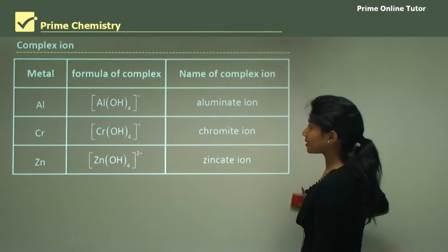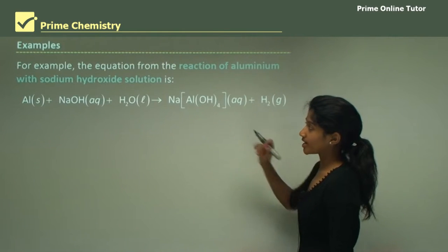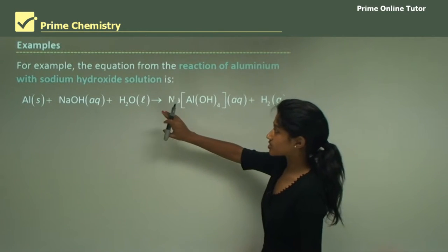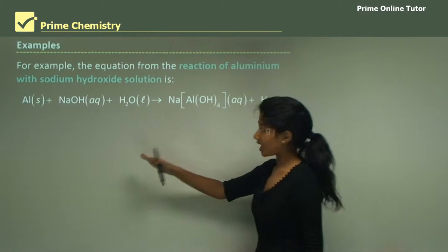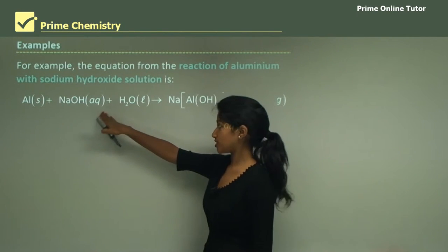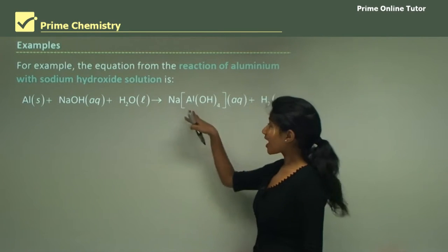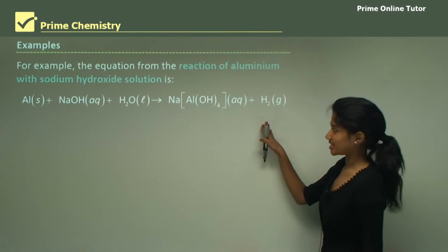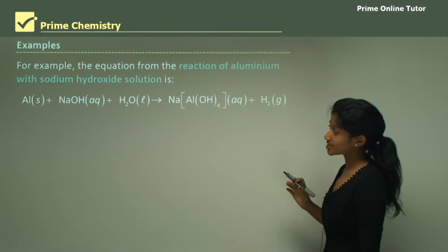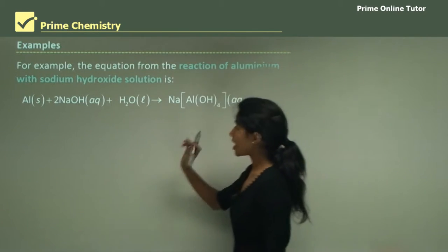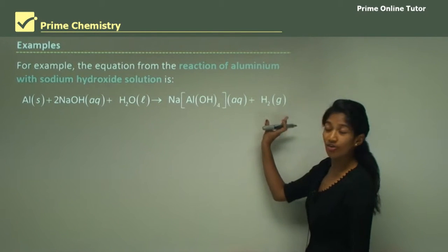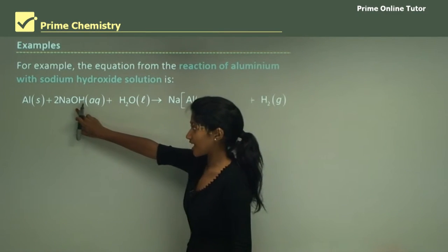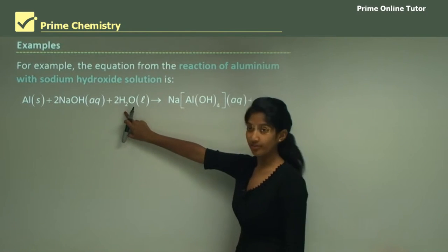Let's take an example. The equation for the reaction of aluminium with sodium hydroxide shows aluminium reacting with sodium hydroxide to produce water, sodium aluminate ion, and hydrogen gas. To begin balancing, put a 2 in front of NaOH because there is an excess of hydrogen ions on that side, and also put a 2 in front of H2O.